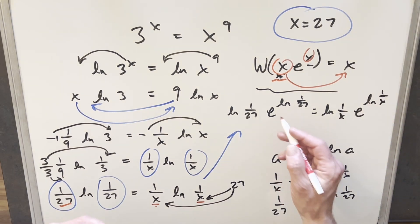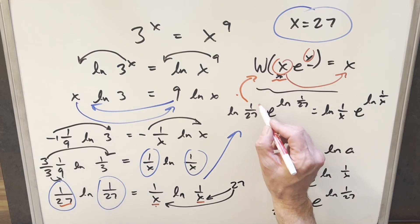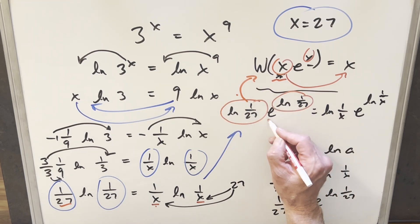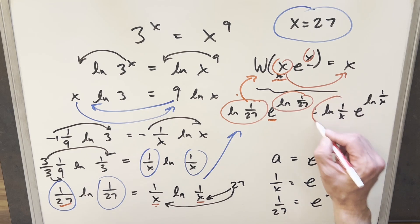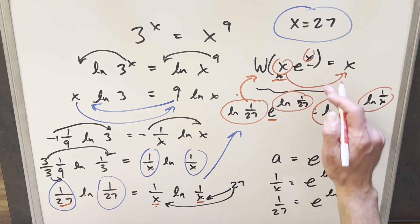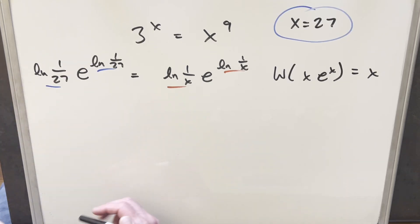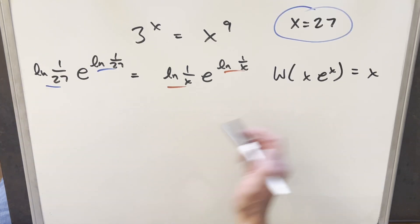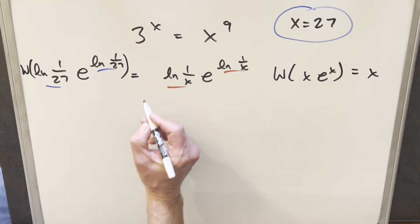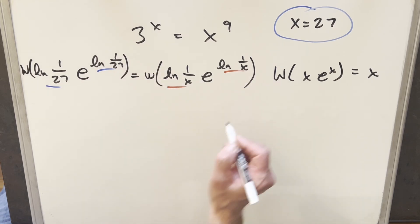At this point we've done it — we have exactly the x·e^x form on both sides, where we have the same input on both the coefficient and the exponent of e on each side. So in both cases, we're perfectly set up to use the Lambert W function. We'll go ahead and apply the Lambert W function on the left side and on the right side.